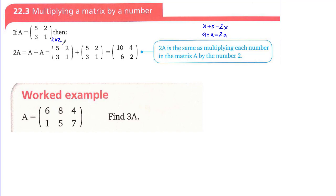Only the same entries can be added: 5 added to 5, 2 added to 2, 3 plus 3, 1 plus 1. The resultant matrix follows from this. We need to understand that 2A is the same as multiplying each number in the matrix by the scalar 2.